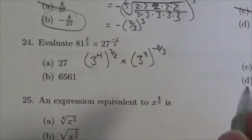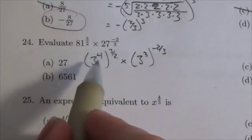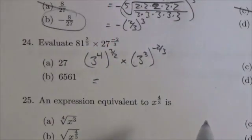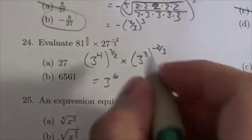So this is now going to become 3 to the, well 4 times 3 halves. A factor of 2 is going to cancel and this is basically going to become 3 to the 6.